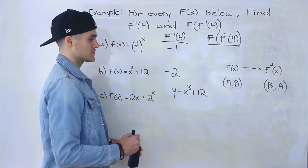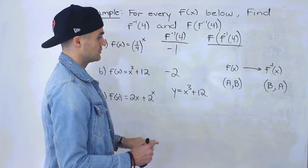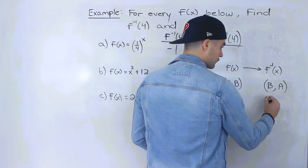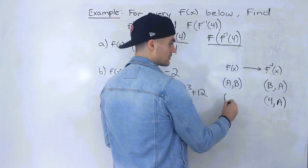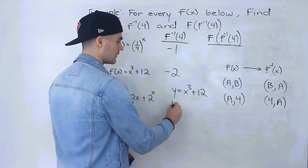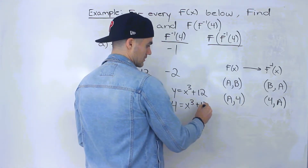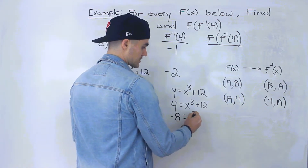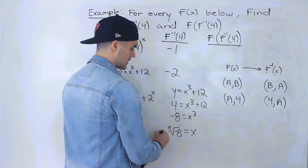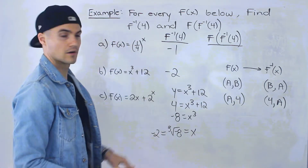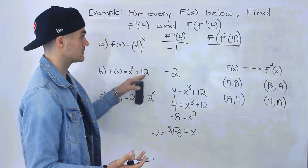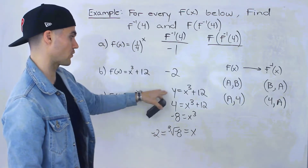What if we use the function directly instead? We're trying to find the value of the inverse when the x value in the inverse is 4, which is the same as solving for x in the function when y equals 4. Plugging in 4 for y gives us 4 minus 12 equals x cubed, so negative 8 equals x cubed. Taking the cube root of both sides gives x equals the cube root of negative 8, which is negative 2 — the same answer. So both methods work.